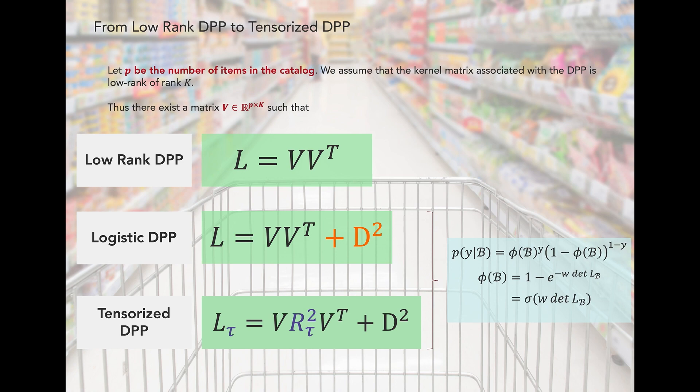We build a logistic DPP model by extending the low-rank model with a diagonal matrix D, which allows us to handle large baskets more effectively.